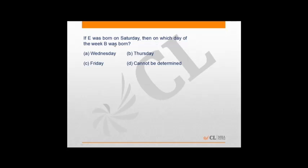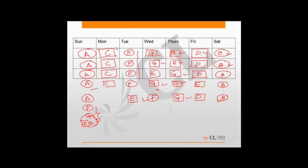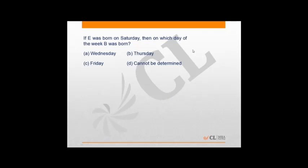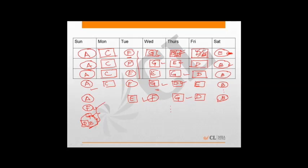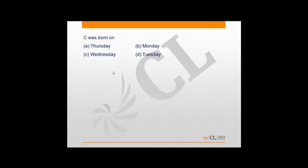Next question: if E was born on Saturday, on which day of the week was B born? If E is on Saturday, F must be on Tuesday. G comes right after F, and B and D occupy the remaining slots — but since the relative order of B and D is unknown, B could be on Thursday or Friday. Therefore the answer cannot be determined — option D.